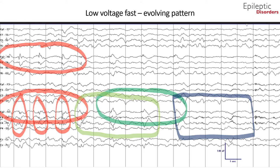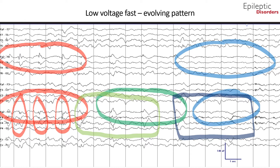This brings us to the concept of post-ictal slowing, which is most obvious over the right frontal regions as outlined in the blue circle. Post-ictal slowing is defined as abnormal slow activity or suppression with amplitude less than 10 microvolts within 30 seconds of seizure cessation, lasting more than 2 seconds.